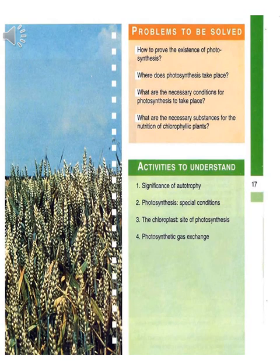The problems to be solved in Chapter 1 include: how to prove the existence of photosynthesis, where does photosynthesis take place, what are the necessary conditions for photosynthesis to take place, and what are the necessary substances for the nutrition of chlorophyllic plants.